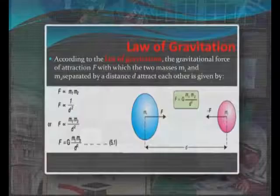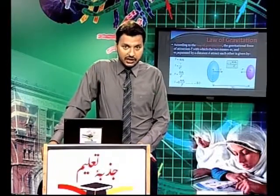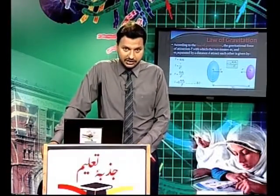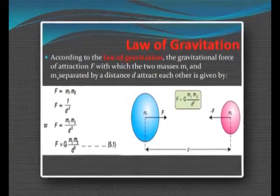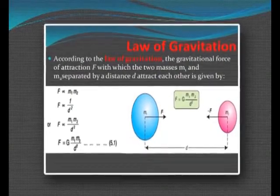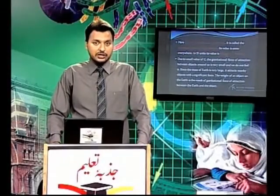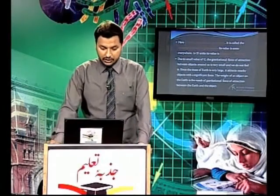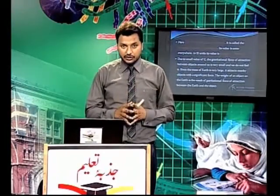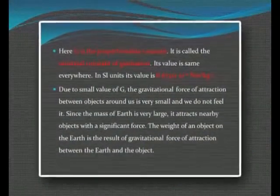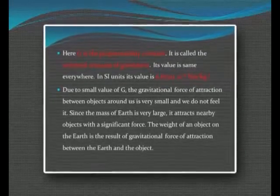Physics में rule है कि जब भी हमने proportional खतम करना होता है, तो हम equals to लगाते हैं और साथ कोई न कोई constant लगाया जाता है. यहाँ पर हमने equals to लगाया और साथ constant लगाया G. यह G constant है जिसको हम कहते हैं proportionality constant, और दूसरा इसको हम universal constant of gravitation भी कहते हैं. इस G की value बहुत small होती है — 6.673 × 10⁻¹¹ newton meter square per kilogram square.